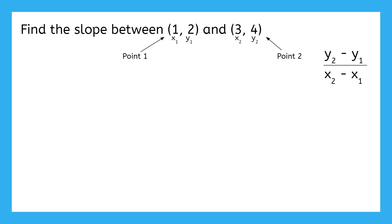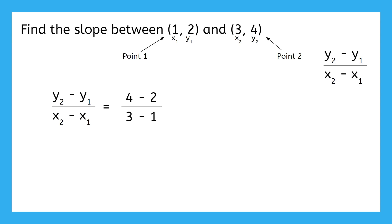Now that we know which variables stand for which numbers, we just plug them in. y2 is 4 minus y1, which is 2, over x2, which is 3, minus x1, which is 1. If we subtract on top and bottom, we get 2 over 2, which is 1. So the slope of the line that goes through both of these points is just 1.